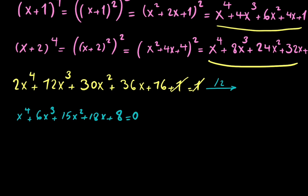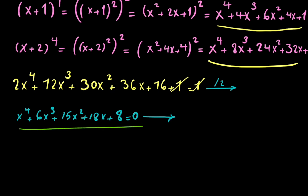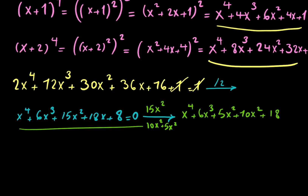Now I want to rewrite 15x² as 10x² plus 10x² plus 5x² — wait, more carefully as splitting terms. I write x⁴ plus 6x³ plus 5x² plus 10x² plus 10x² ... let me regroup: x⁴ plus 6x³ plus 5x² plus 10x² plus 18x plus 8 equals 0.